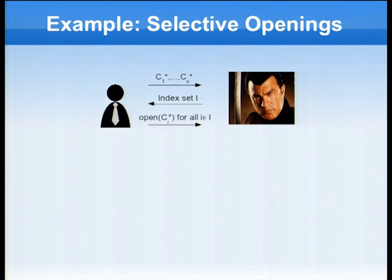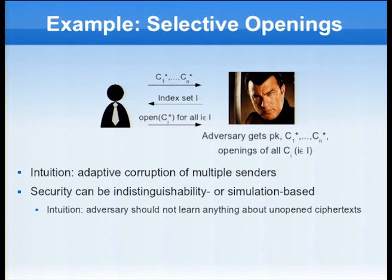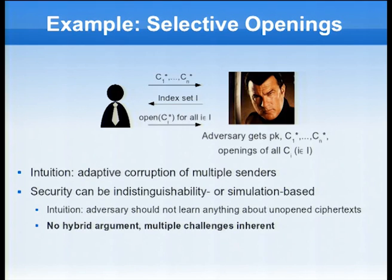The open ciphertexts — well, he knows all about them already. So in this situation, the adversary gets the public key, all of the ciphertexts, and the openings of some of them. And it turns out that a hybrid argument in this setting simply fails. We cannot argue that the scheme is secure in the one-challenge case and then conclude security in this multi-challenge setting. The reason is that we wouldn't even know how to translate or how to build a one-challenge setting for this particular game.